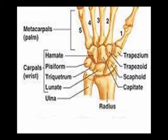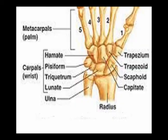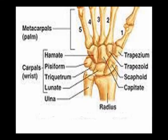A single upper extremity includes 14 phalanges, which are the finger bones. There are proximal, intermediate, and distal phalanges. There are five metacarpal bones and eight carpal bones. The carpal bones are the bones of the wrist.